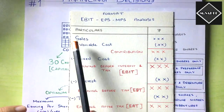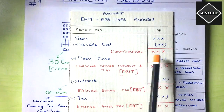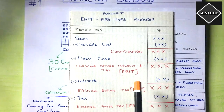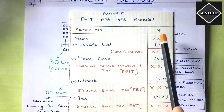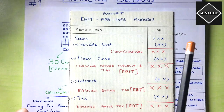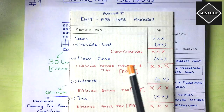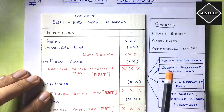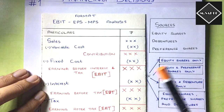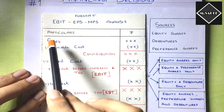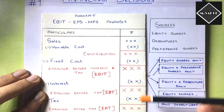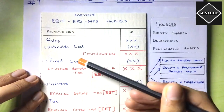In the EBIT EPS format, we have sales minus variable cost giving contribution, and contribution minus fixed cost giving EBIT. However, that part — from sales to fixed cost — is meant for leverage problems. In capital structure and EBIT EPS analysis problems, the EBIT will be given directly to you in the question. So you directly start from EBIT. In leverage problems, that portion is not given and you start from sales.